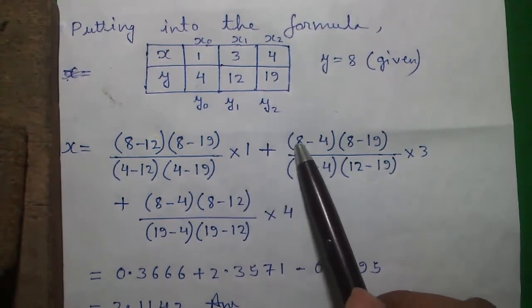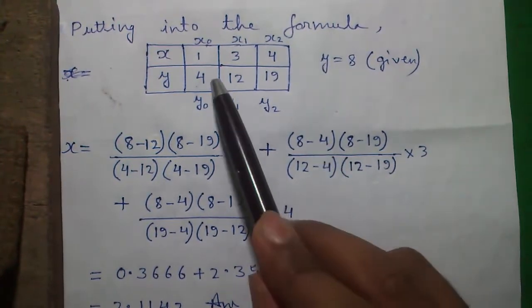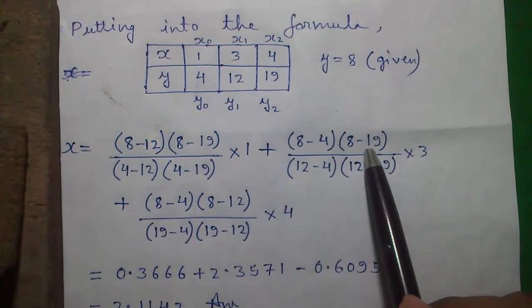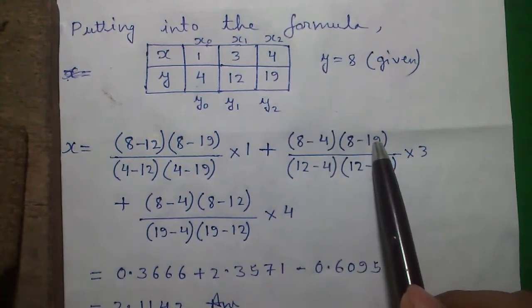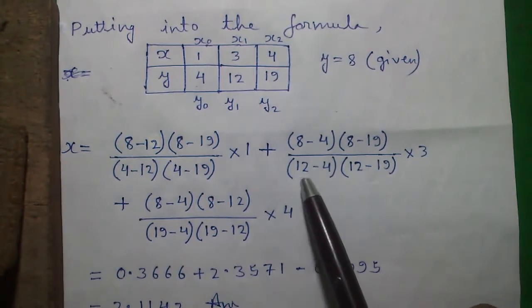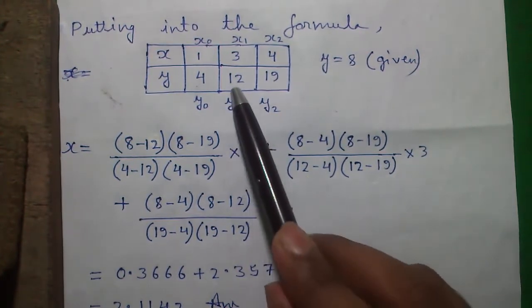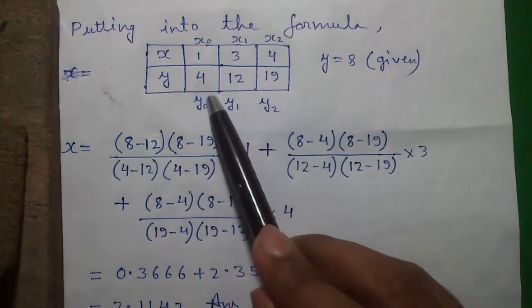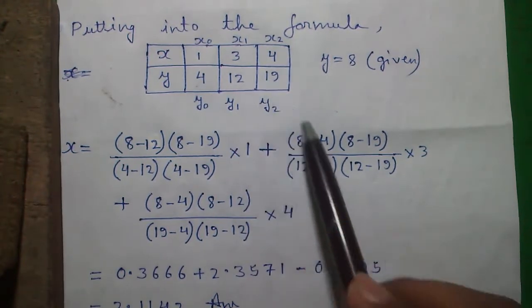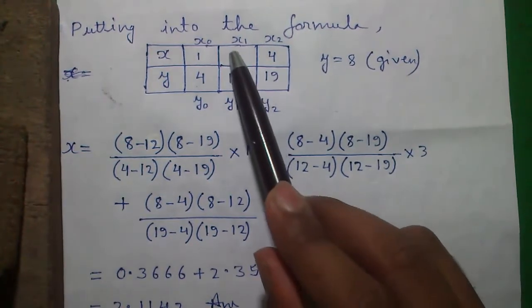So in the next term, y minus y0, this is 4, and y minus y2, this is 19. Y1 will be skipped. And in the denominator we will subtract everything from y1, so that is 12. 12 minus y0 and 12 minus y2 into x1, this is 3.